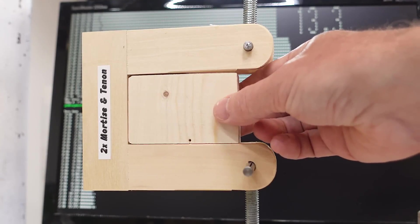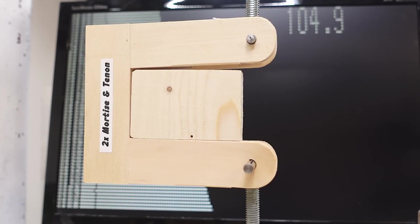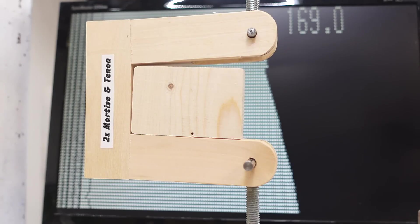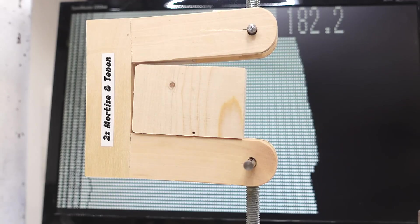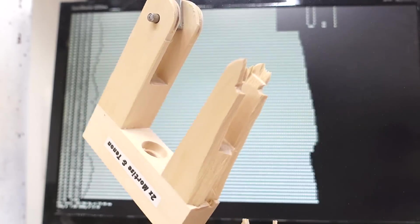So, this is a double mortise and tenon joint which should have a lot more glue area. Yeah, I expect this to be stronger. So, this is now more than the bridle joint had. But, it's definitely... Whoa! It's definitely starting to fail, I was gonna say.